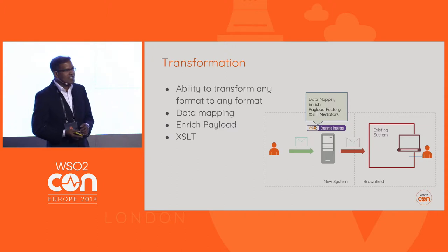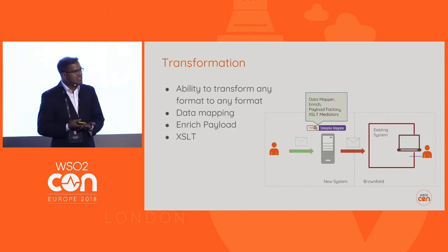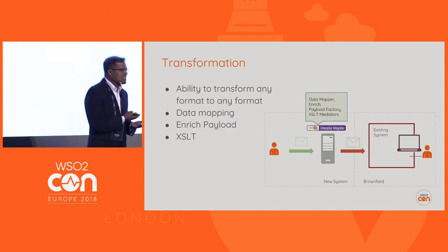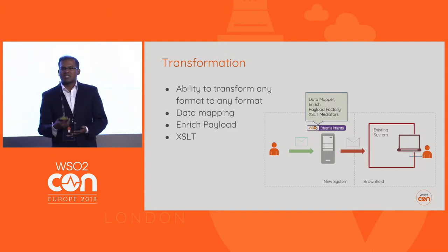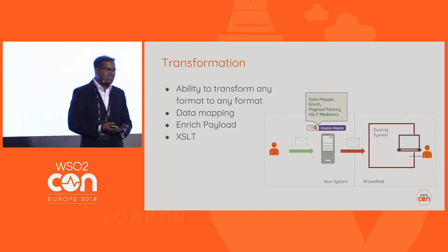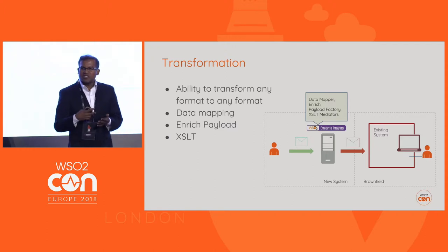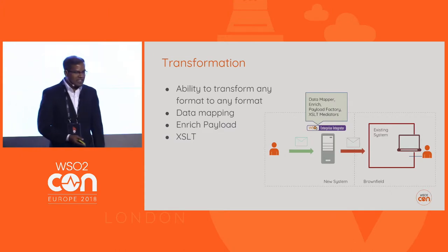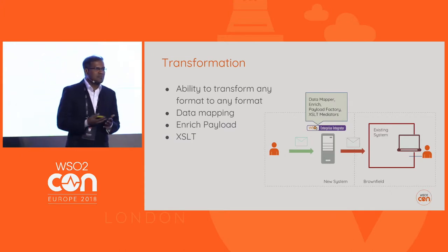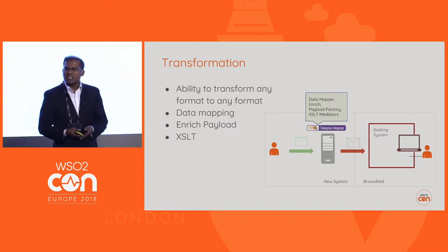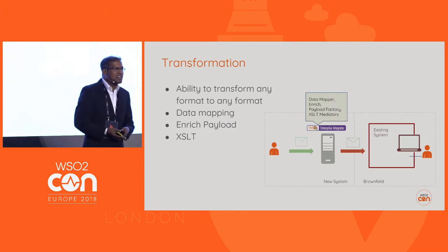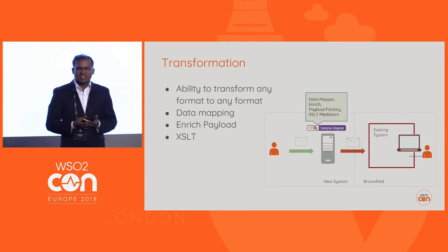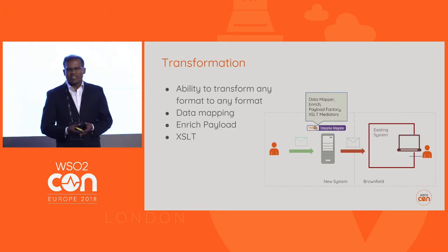Using the Data Mapper mediator, we can convert between XML, JSON, and CSV formats. It can take a message or a schema as the input format and then transform based on the wiring done in the data mapper. We also have the Enrich mediator for simple message enrichment, the Payload Factory mediator to construct a simple message and parameterize elements within it, and the XSLT mediator for complex transformations.